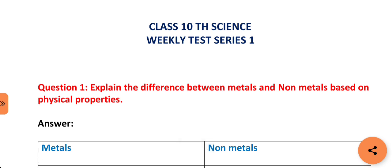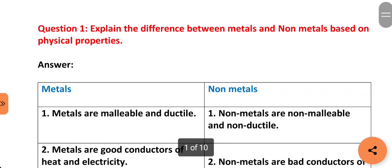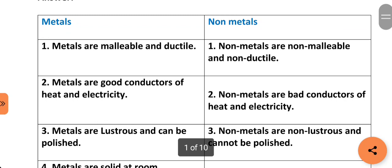Our first question is: explain the difference between metals and non-metals based on physical properties. Metals are malleable and ductile, whereas non-metals are non-malleable and non-ductile. Metals are good conductors of heat and electricity, whereas non-metals are bad conductors of heat and electricity.